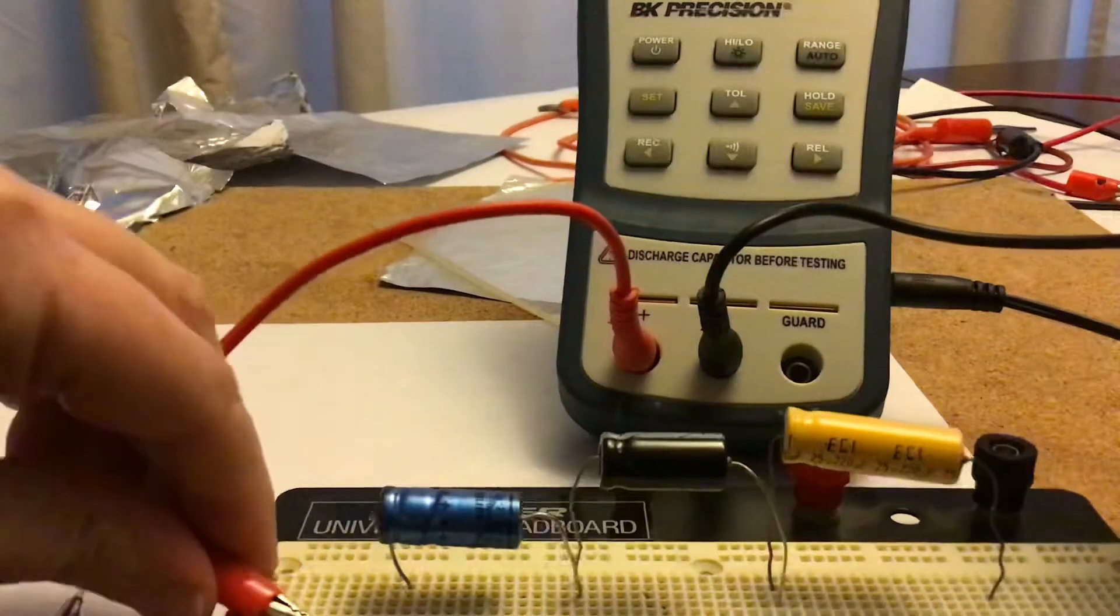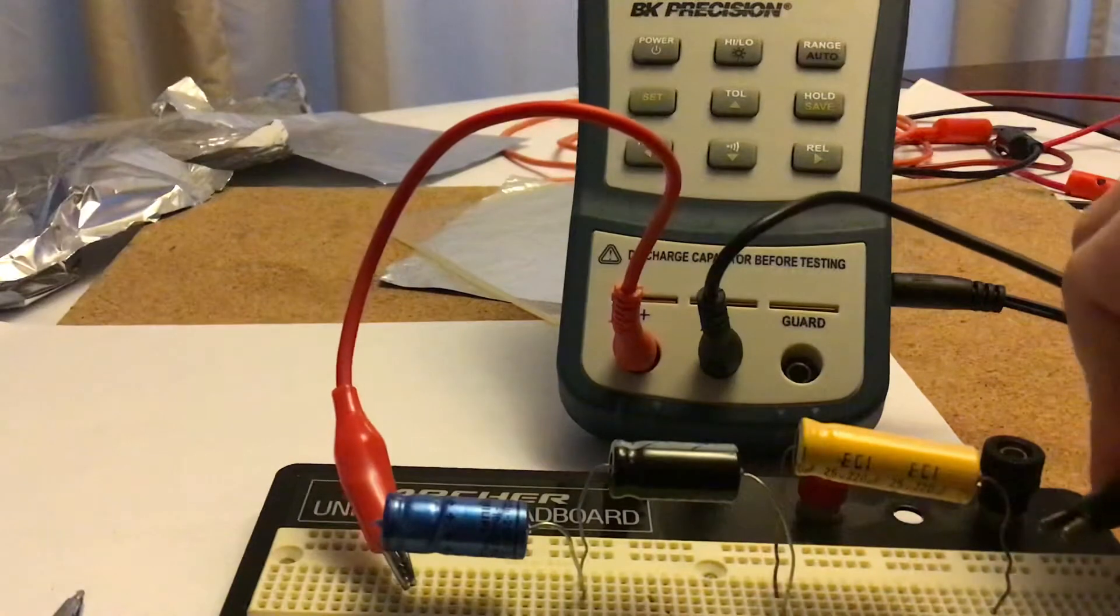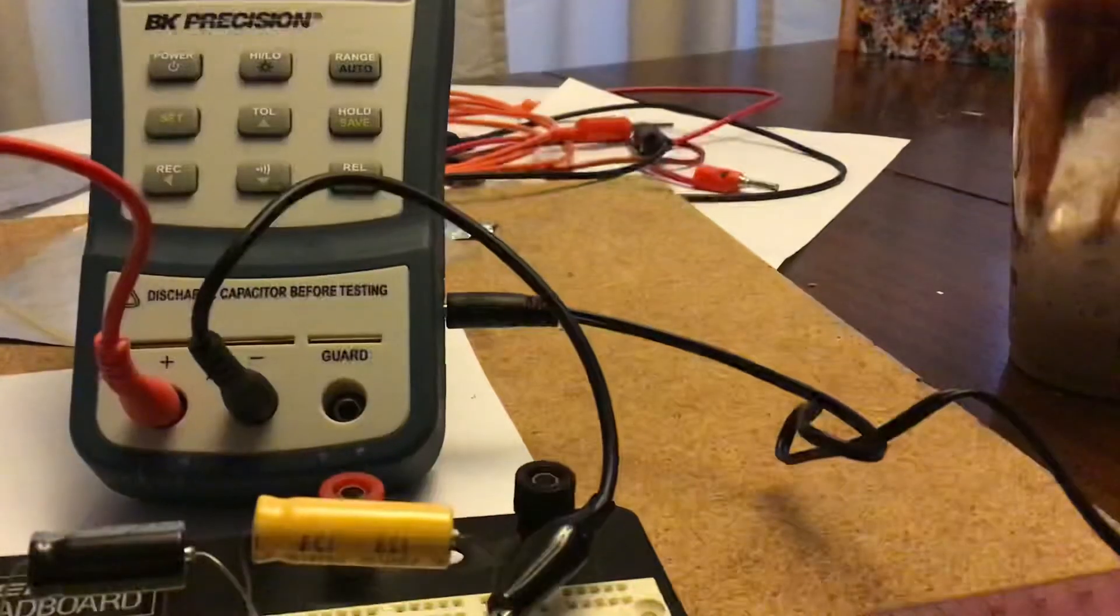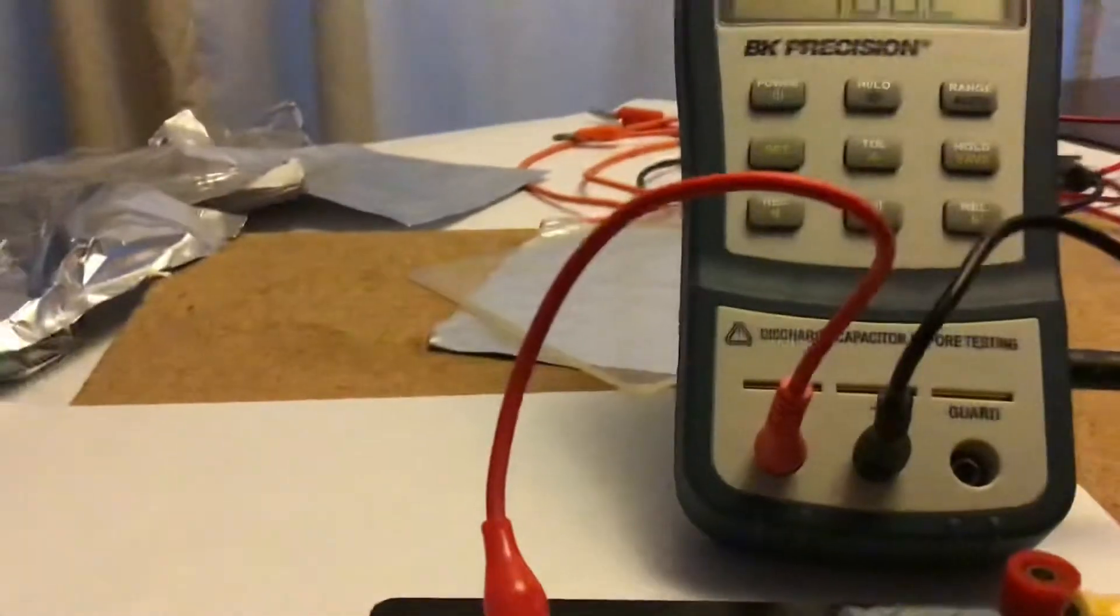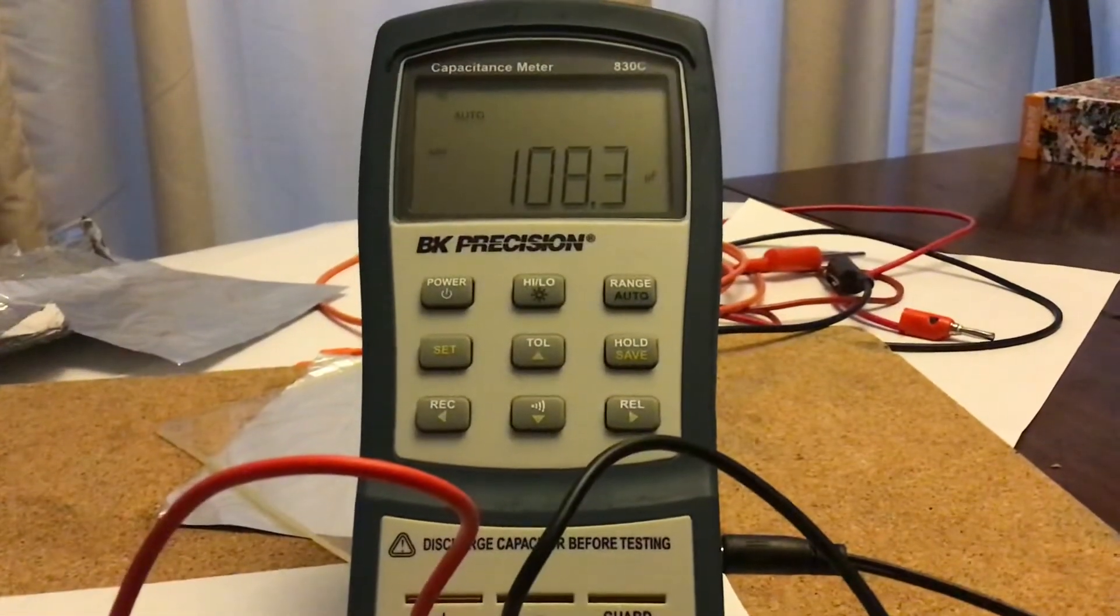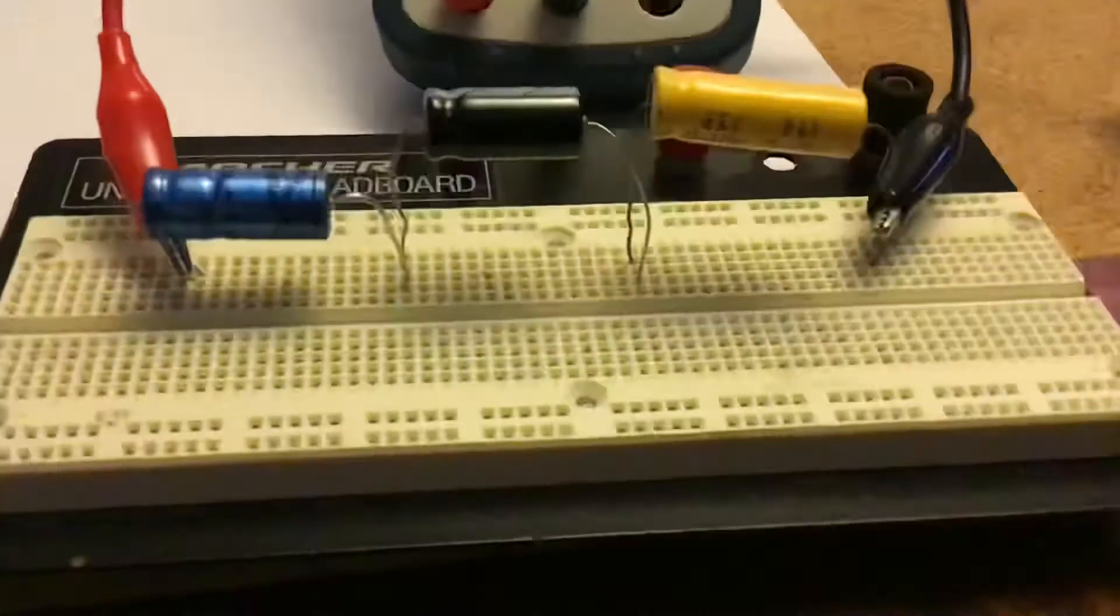So, I'm going to measure from one end. That's the positive end and this is the negative end. The left end is positive and the right end is negative. Okay, you ready? Let's go see. 108.3 microfarads. 108.3 microfarads.